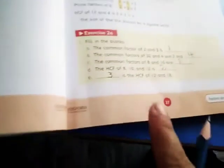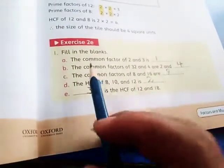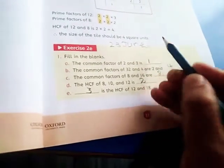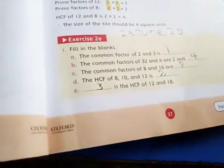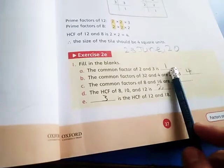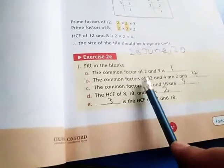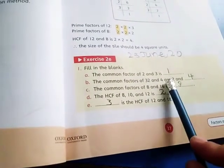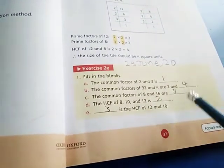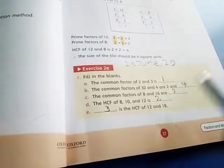Page number 37, Exercise 2E. Write down the date so you can remember on which date you have done this. Fill in the blanks. The common factor of 2 and 3 is obviously 1. The common factors of 32 and 4 are 2 and 4.